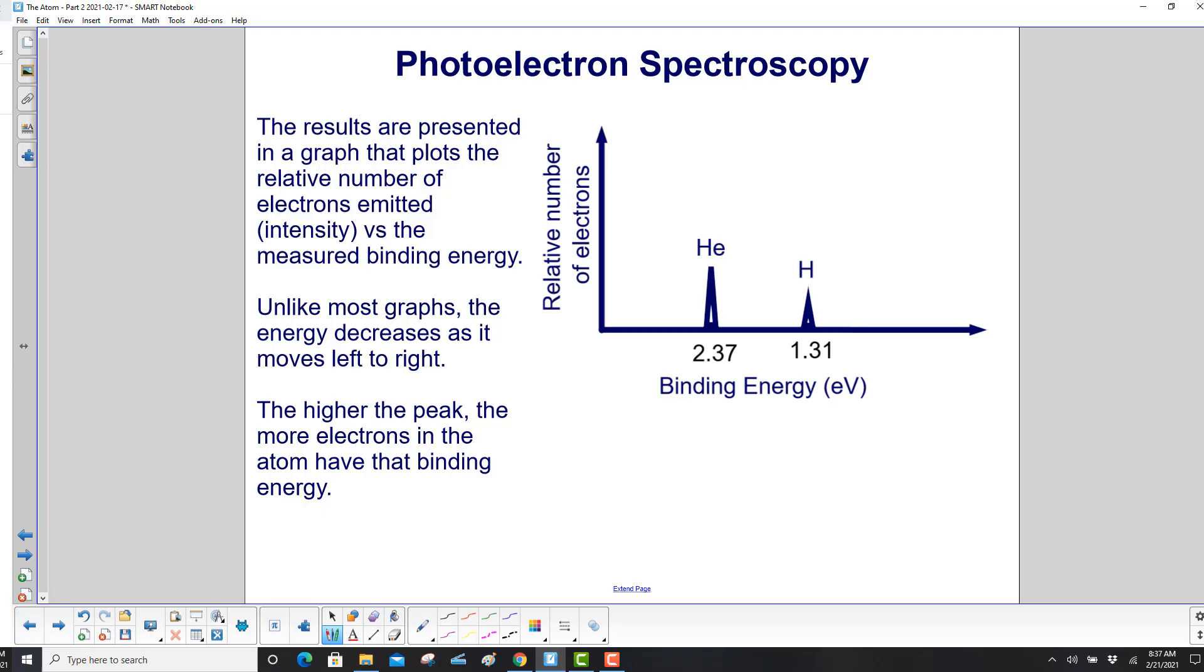Here's our first example. The results are plotted in a graph that plots the relative number of electrons emitted, which is related to the intensity, versus the measured binding energy. We've got energy here and intensity there, or relative number of electrons. Unlike most graphs we do, this energy decreases as it moves left to right. So here you have 2.37 eV, here's 1.31.